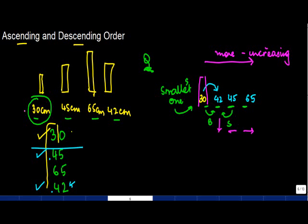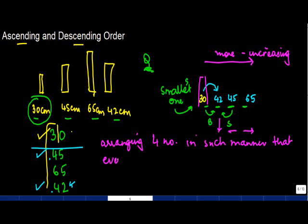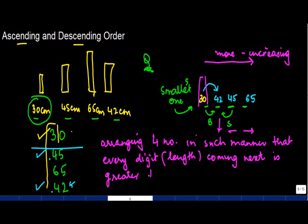So arranging these four numbers, arranging four numbers in such a manner that every digit - and this digit could be anything, it could be length, it could be weight, anything - coming next is greater than preceding and less than the next.